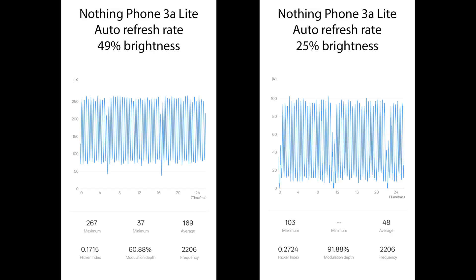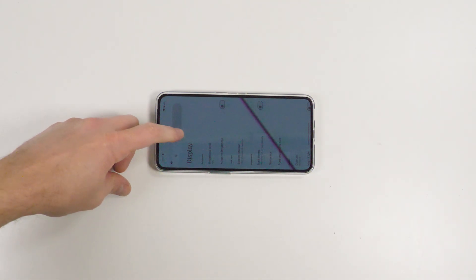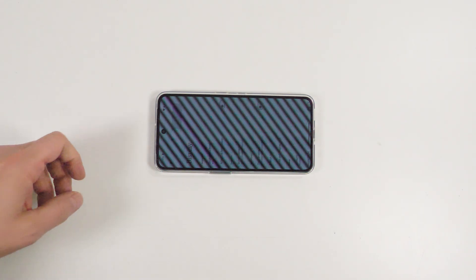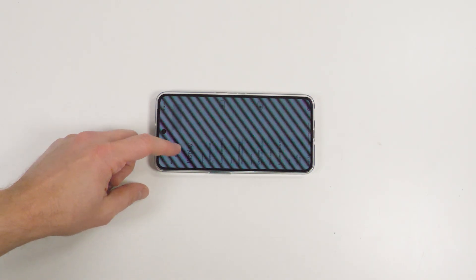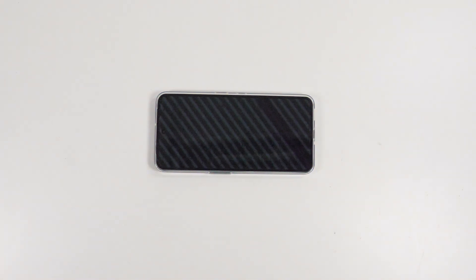That PWM dimming cycle kicks in at 49% brightness and is pretty good, with a nice 2160Hz rate and decent modulation above 35%. Below that, modulation gets a bit high, so if this one bothers you, I'd recommend keeping it above 50% brightness and using a dimming app to dim the screen further.